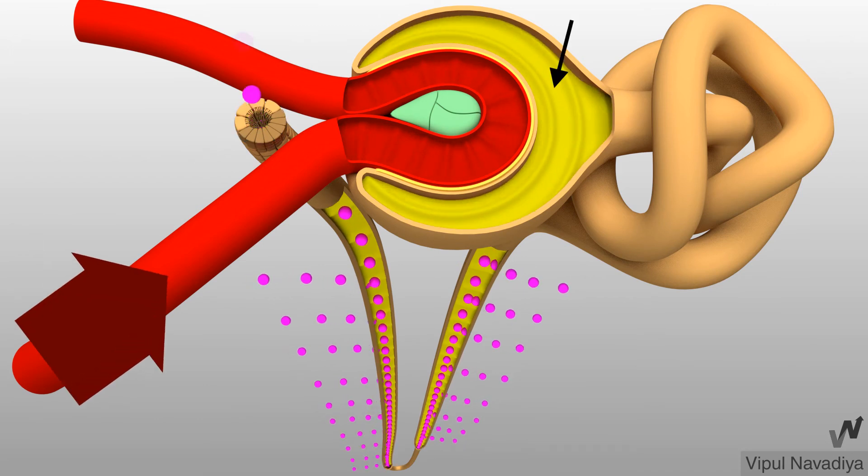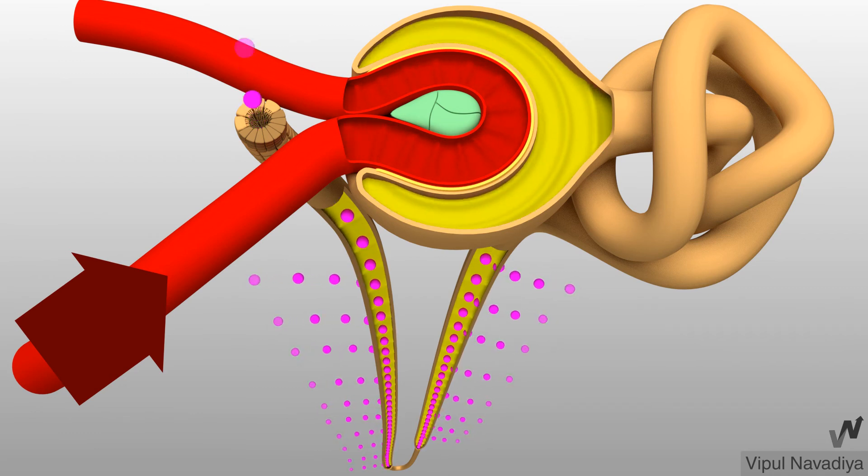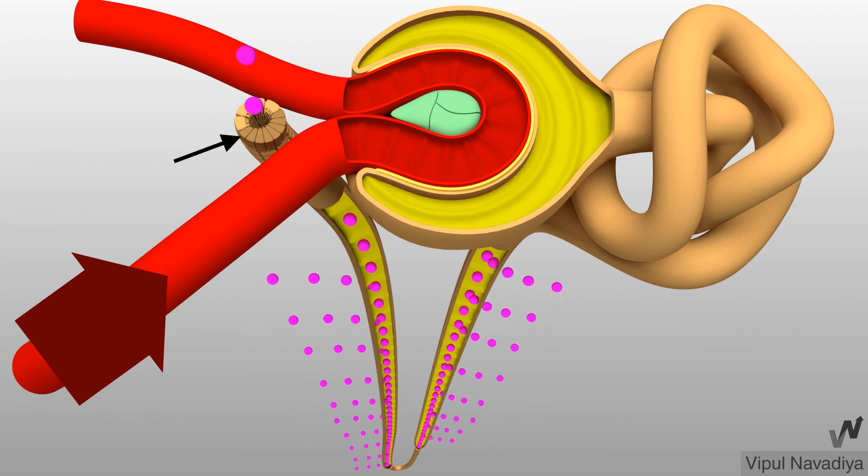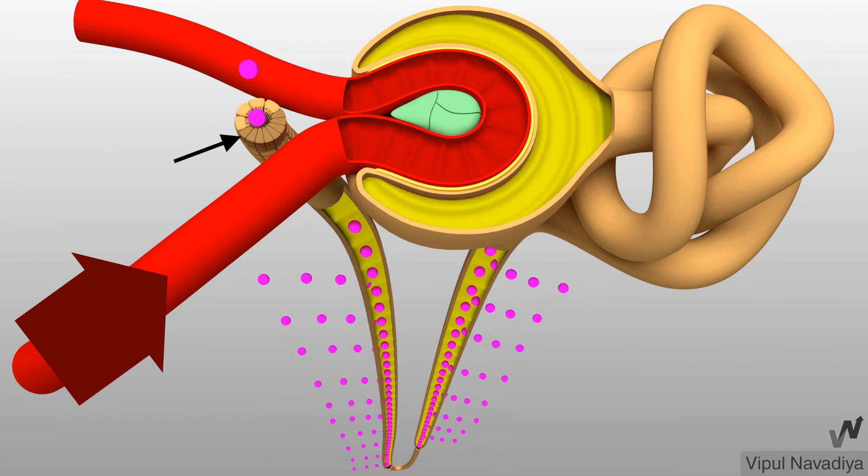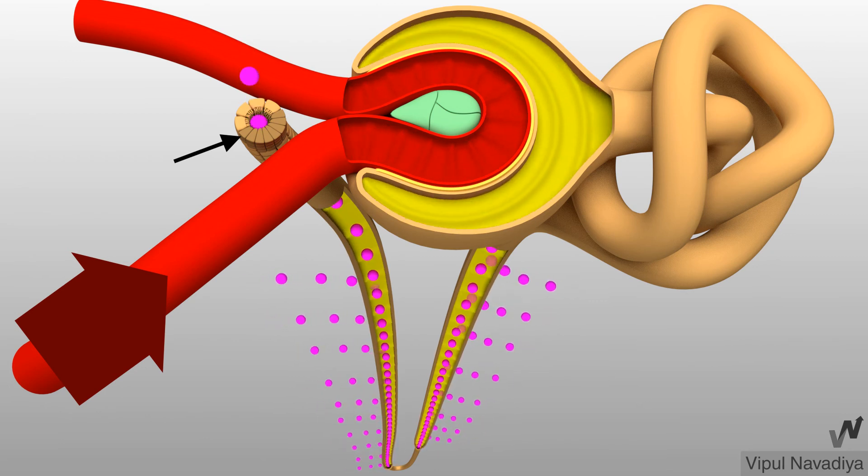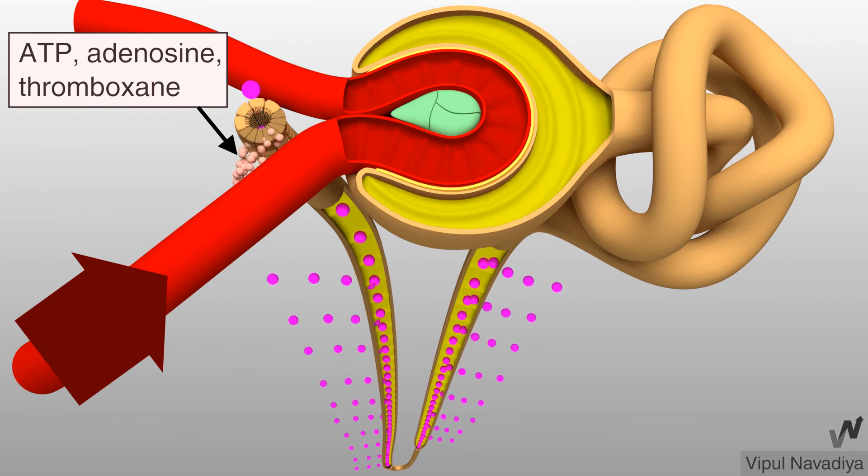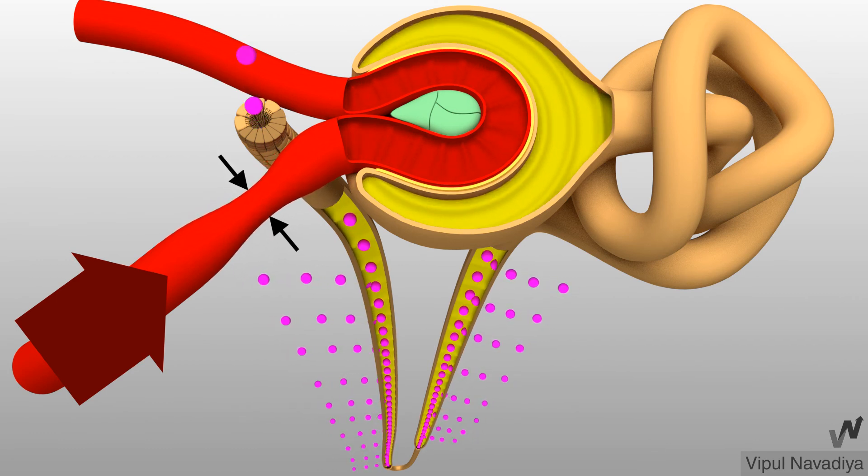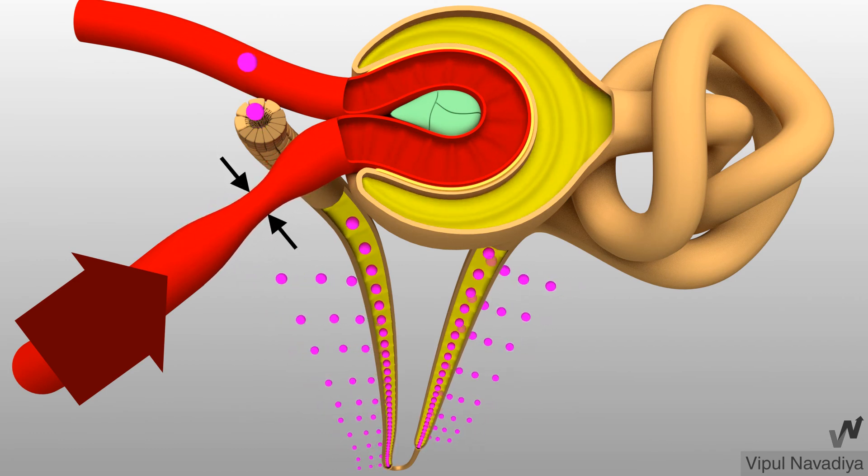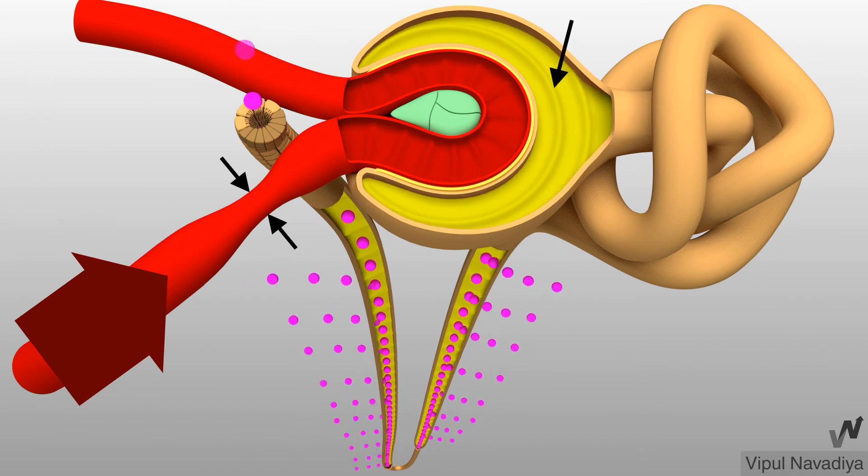Now rise in blood pressure causes rise in GFR. With high GFR, more sodium chloride enters into the tubule and more of it reaches the macula densa. When macula densa sense increased sodium chloride flow, it releases ATP, adenosine, thromboxane etc. These substances cause constriction of afferent arteriole. So afferent arteriolar resistance increases which in turn counteracts initial rise in GFR.